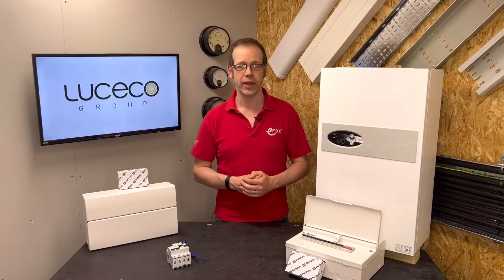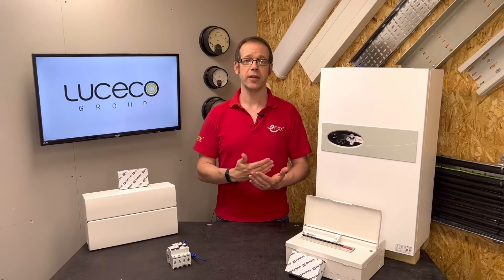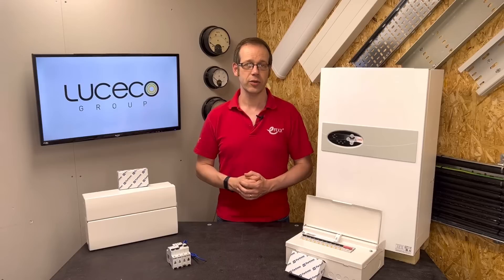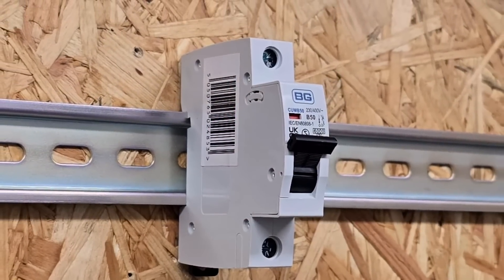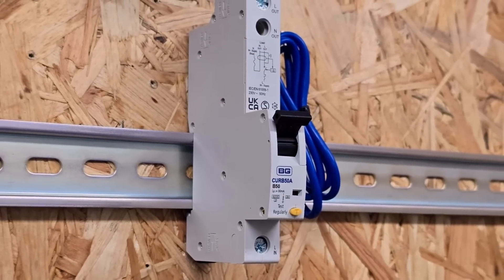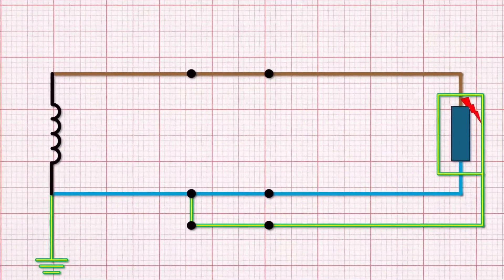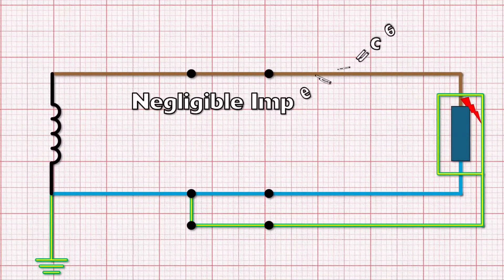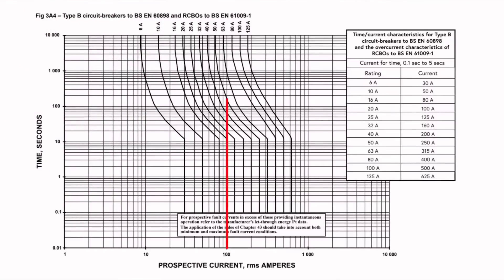If you remember from part one of this training module, we stated that this cable would be surface mounted or clipped direct along its entire length and isn't buried in a wall, so it doesn't require RCD protection. This was a very deliberate choice so that I could explain clearly how to do simple circuit design and demonstrate the use of MCB protection - because if we do use an RCD for additional protection, it can change some of our values. So let's toy with the design and say it does need an RCD. What's the impact?